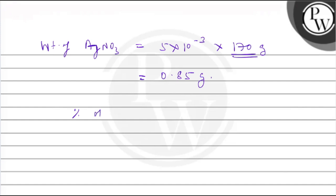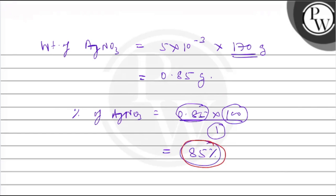The percentage of AgNO3 is 0.85 multiplied by 100 divided by 1. It comes out to be 85%. So the final answer to this problem will be 85%. I hope you understood it well. Best of luck.